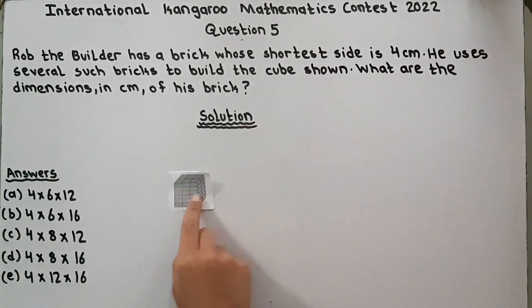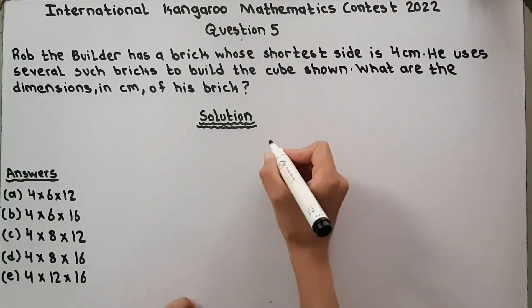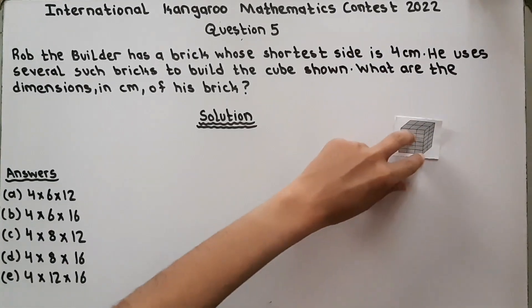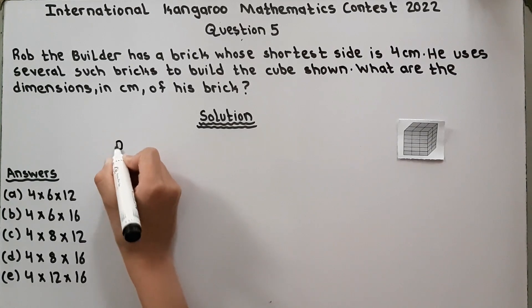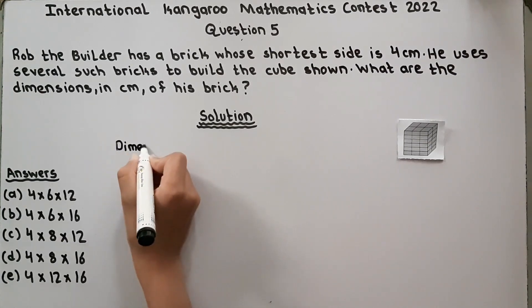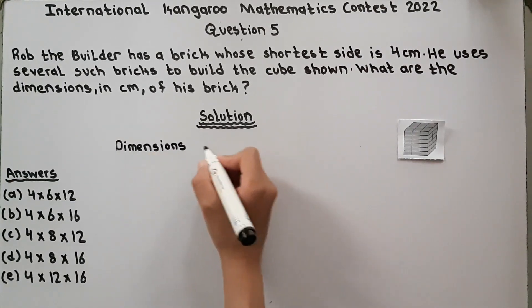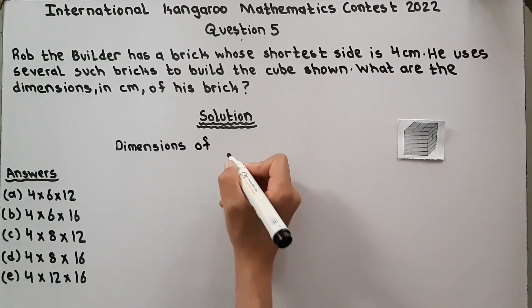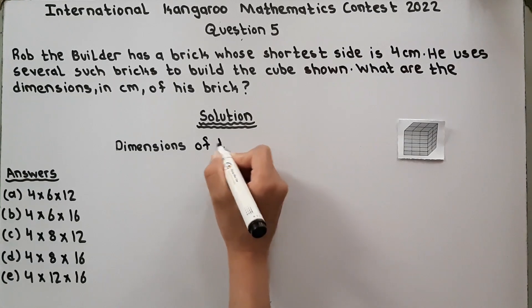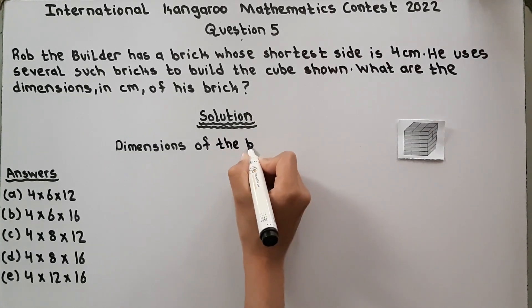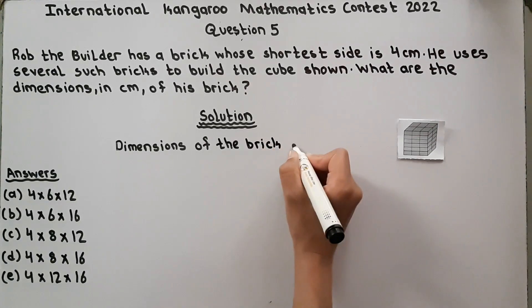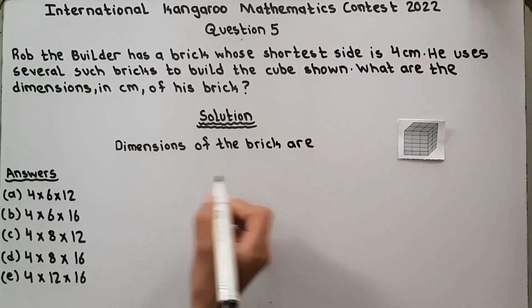What are the dimensions in centimeters of his cube? Now we have to find the dimensions of his cube, bricks. I am sorry, we have to find the dimensions of his brick. So, the dimensions of the brick are height, width, and length.